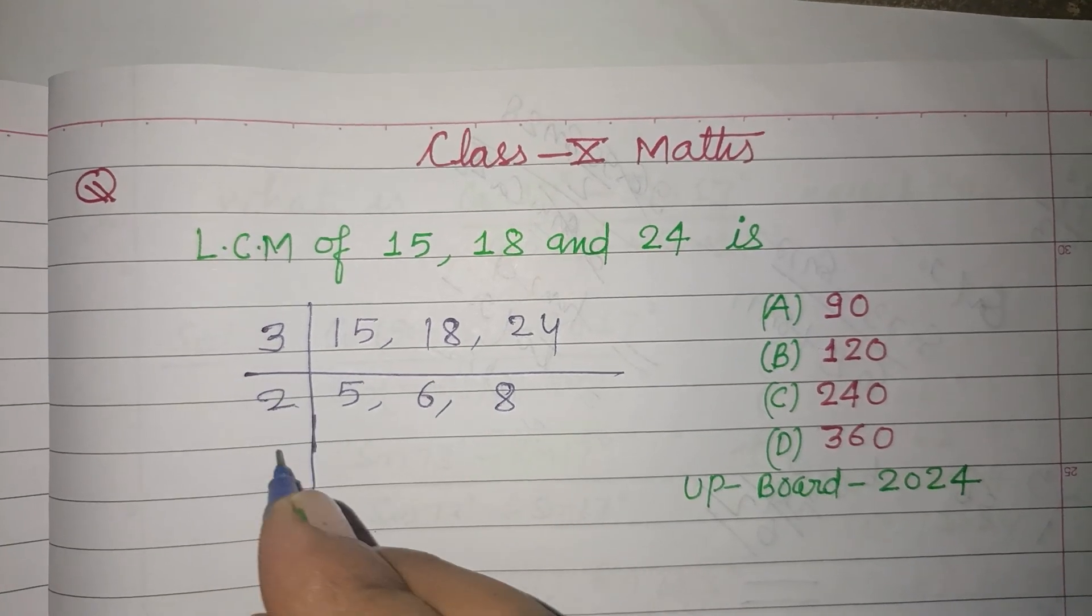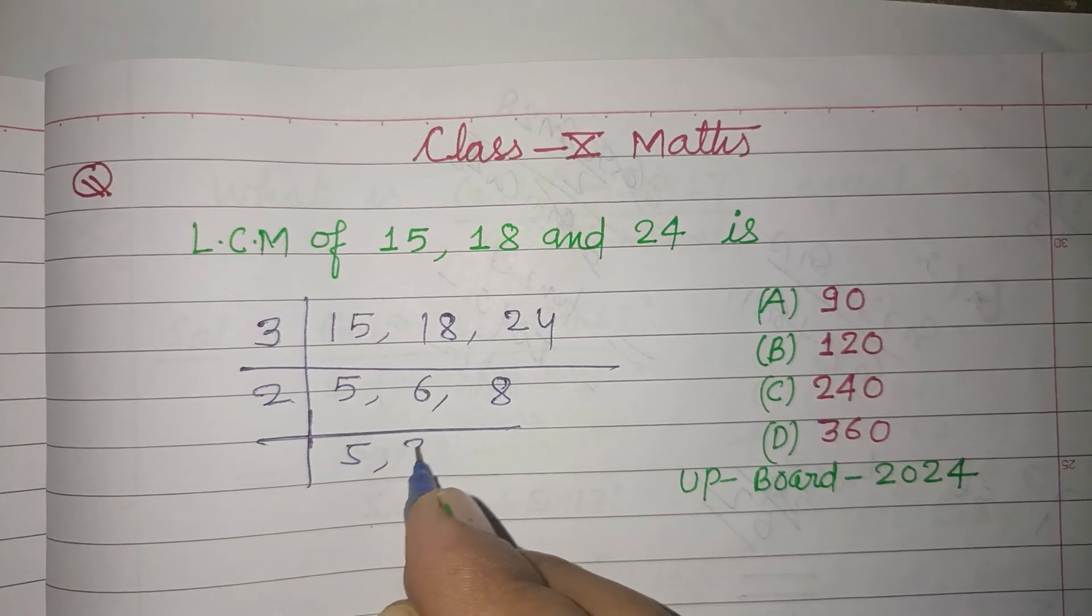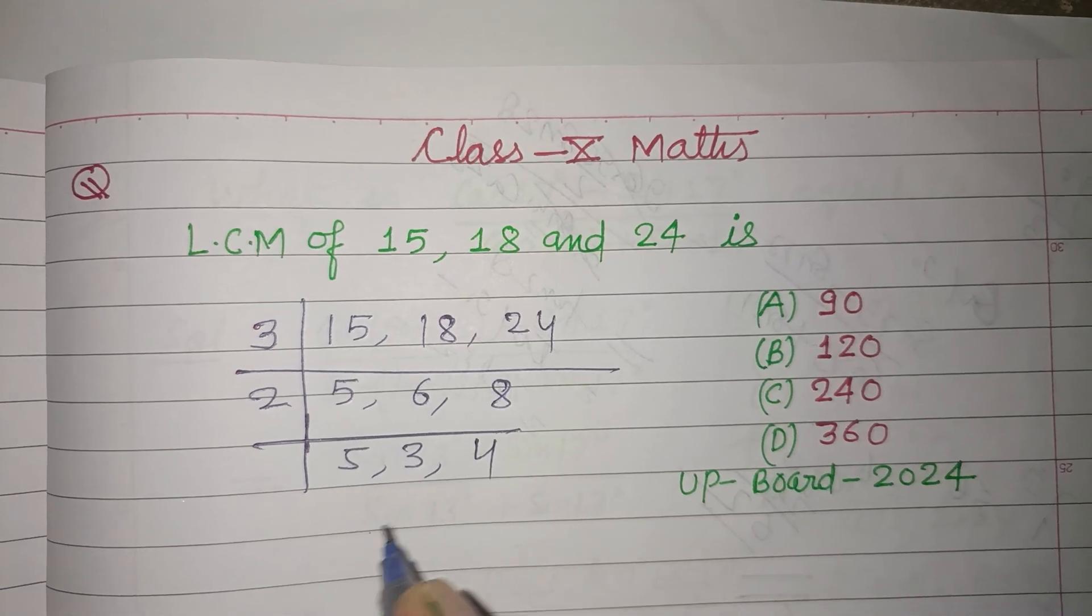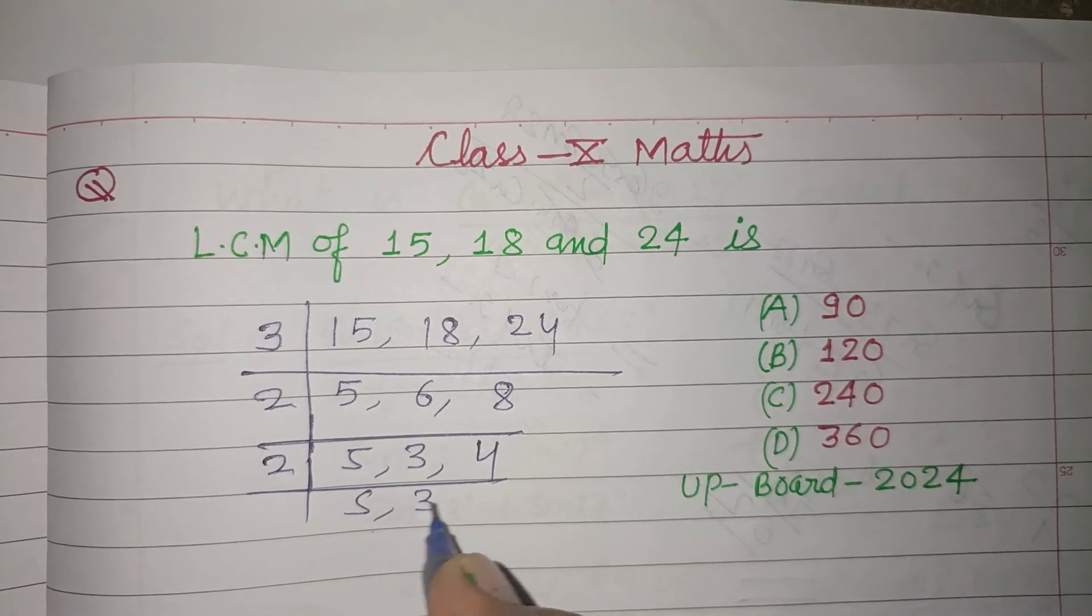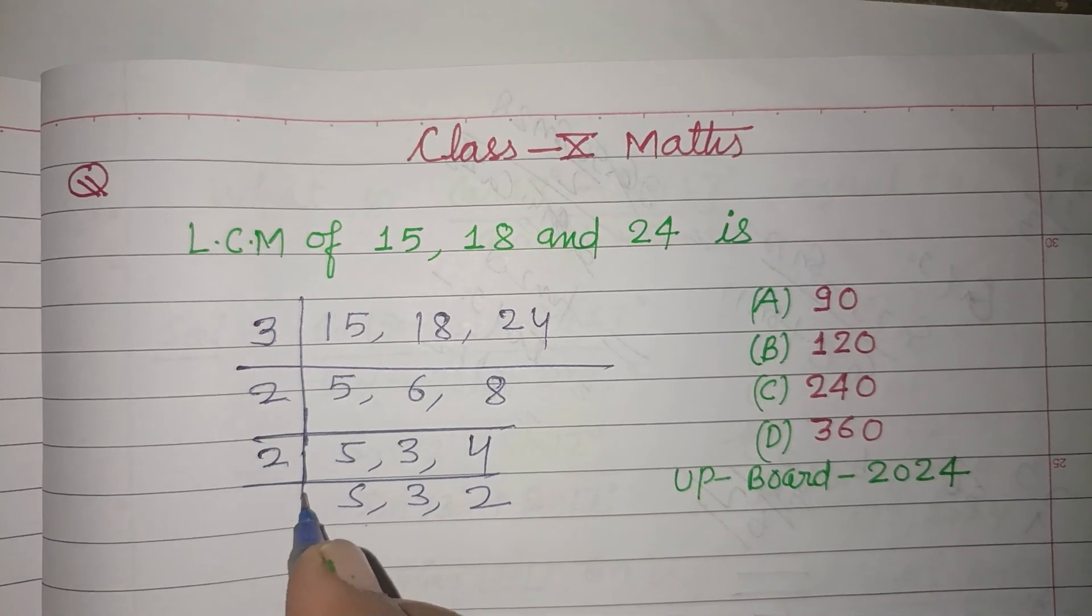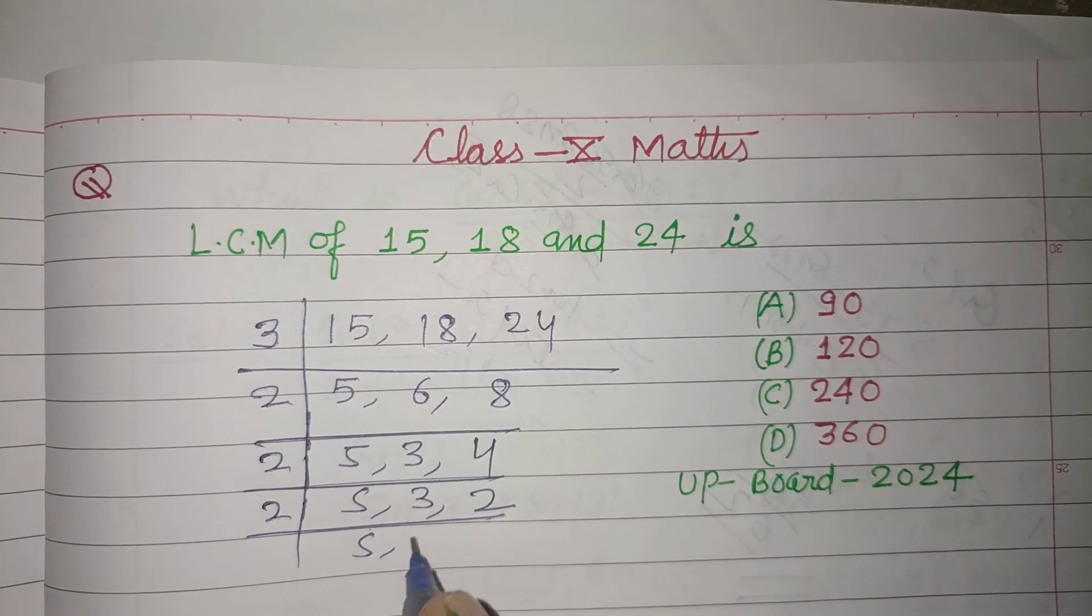Now divide by 2. So this is 5, 2 into 6 is 3, 2 into 8 is 4. Now again by 2, we get 5, 3, 2. Now again by 2, we get 5, 3, 1.